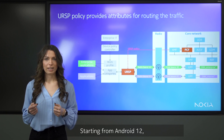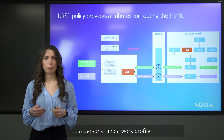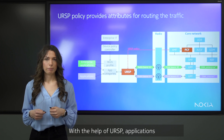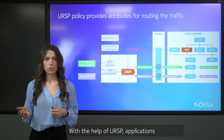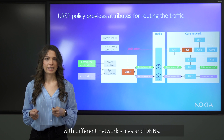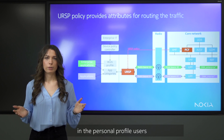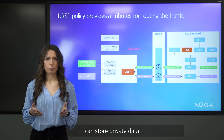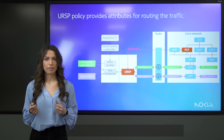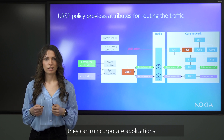Starting from Android 12, users can separate their applications to a personal and a work profile. With the help of URSP, applications in each profile can be associated with different network slices and DNS. For example, in the personal profile a user can store private data and use it for off-work entertainment, while in the work profile they can run corporate applications.